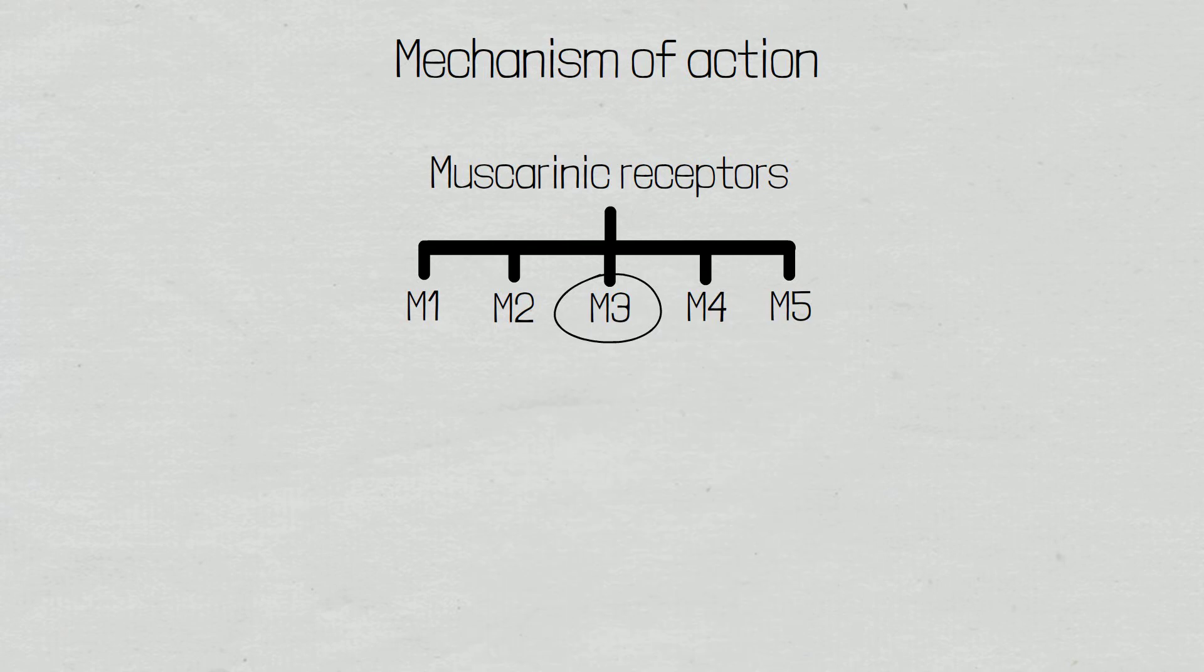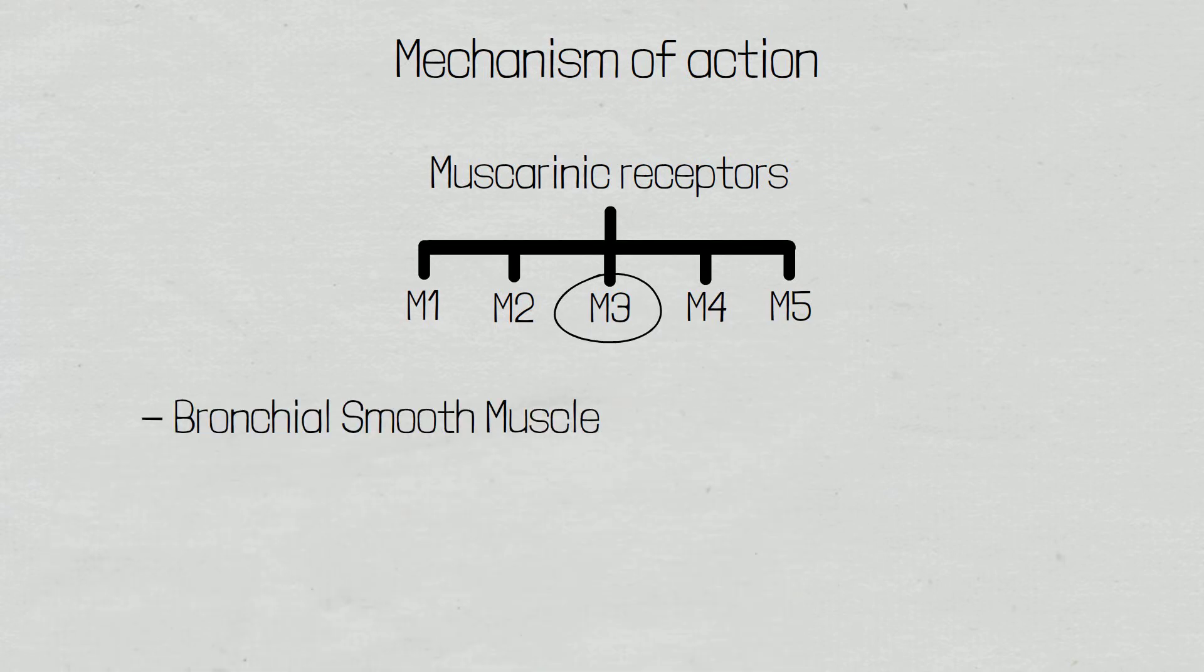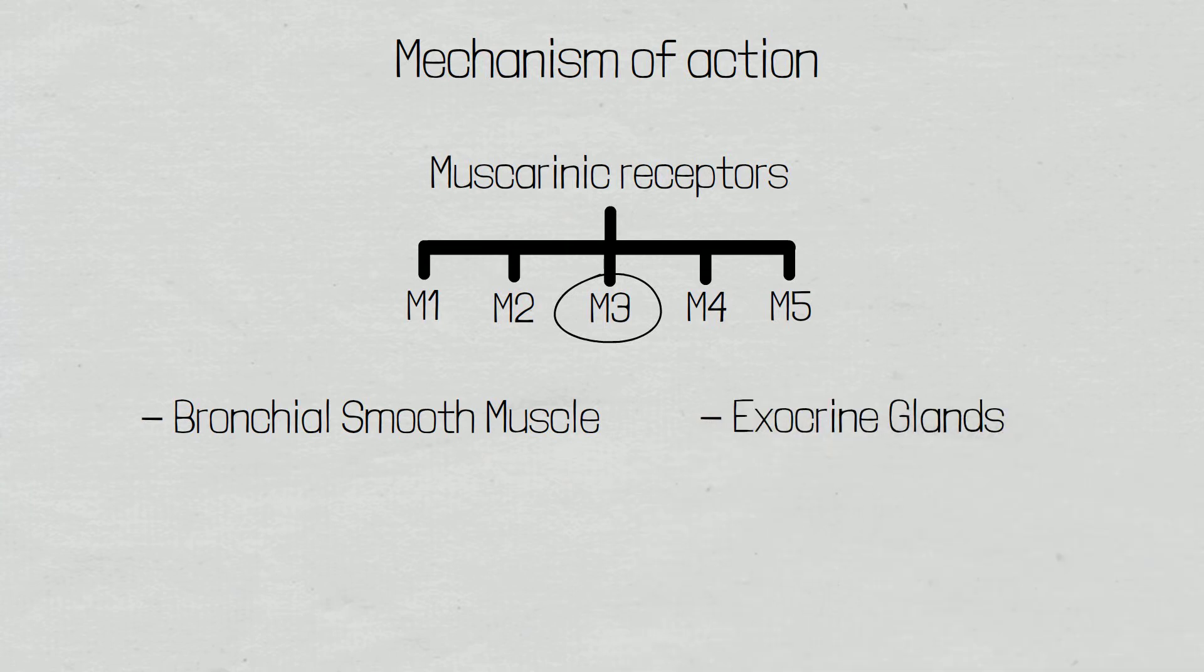Muscarinic type 3 receptors can be found on bronchial smooth muscle cells as well as exocrine glands. It is these muscarinic type 3 receptors which are the target site of ipratropium bromide.